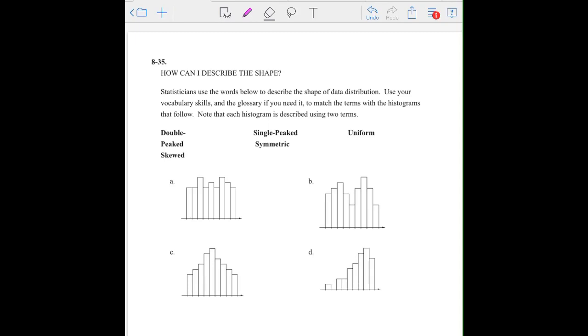Let's move on to problem 8-35. How can I describe the shape? Statisticians use the words below to describe the shape of the data distribution. Use your vocabulary skills, the glossary if needed, that's the dictionary, to match the terms with the histograms that follow. Note that each histogram is described using two terms. So let's take a look at it. So I think there's 1, 2, 3, 4, 5 vocabulary words here.